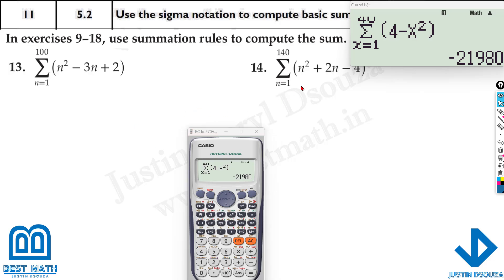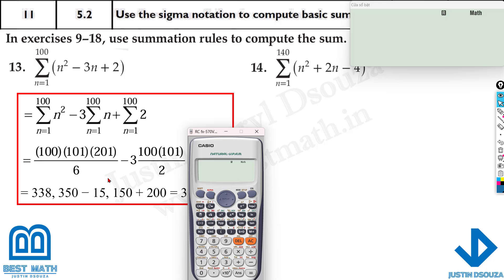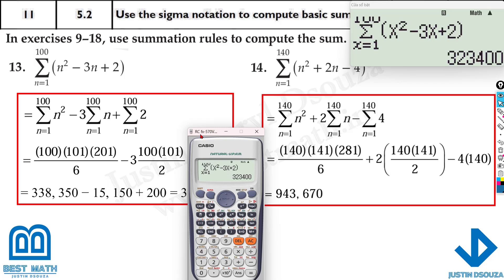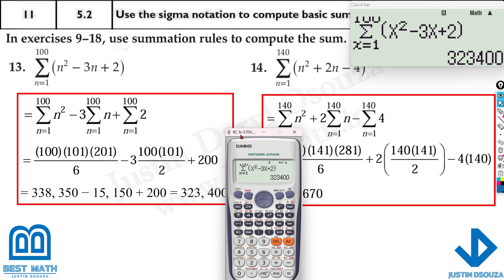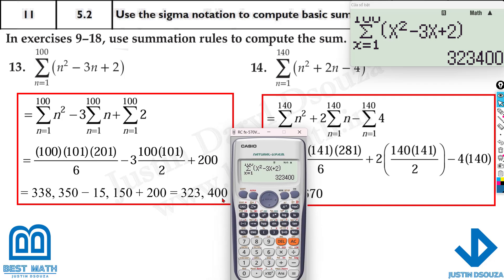Similarly you can solve these, doesn't matter if they're huge, it's the same method. Let me try this one here. It is n but we use again here x squared minus 3 times x plus 2, and it's from 1 to 100. And here we go, the answer will just take some time: 323,400. That's how we solve it.